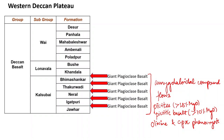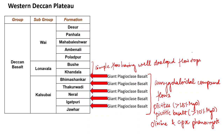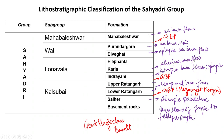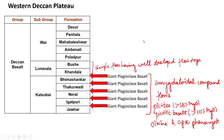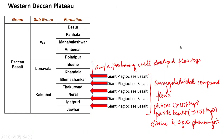The Giant Plagioclase Basalt separates each of these horizons. The Lunavada subgroup has two formations — Khandala and Buche — which have mostly simple flows with well-developed flow tops. The Vai subgroup consists mostly of AA lava flows which are aphyric in nature.